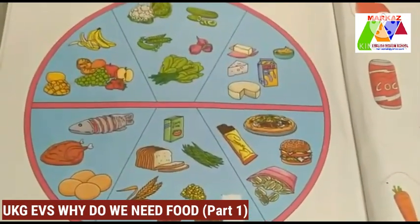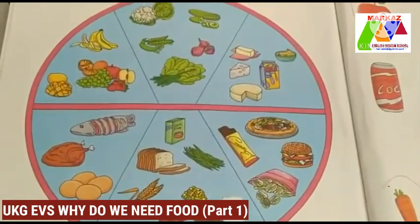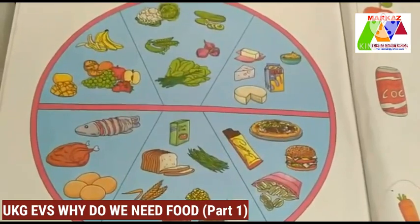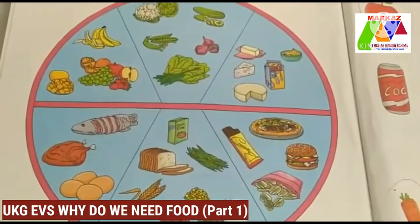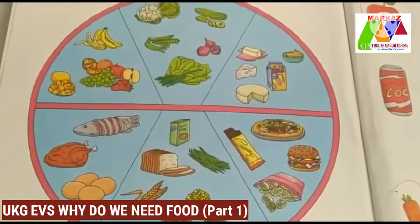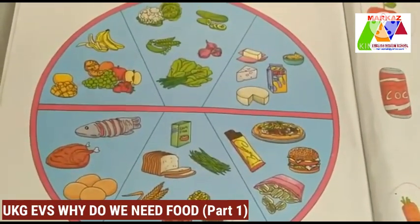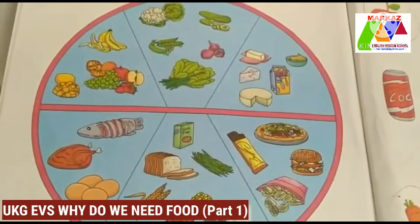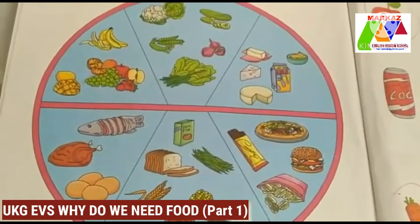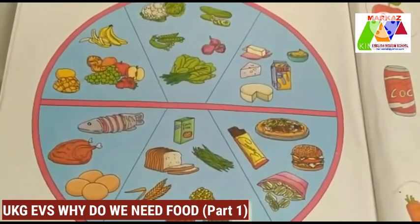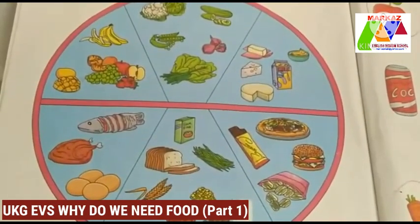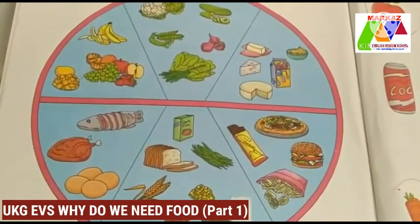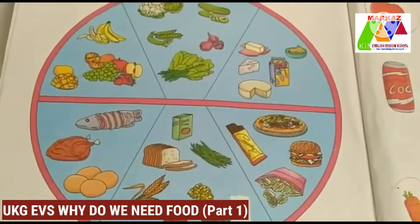Our food consists of grains, pulses, vegetables, fruits, fish, meat, milk and eggs.